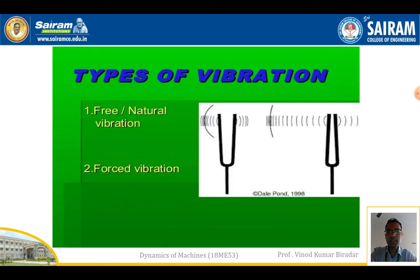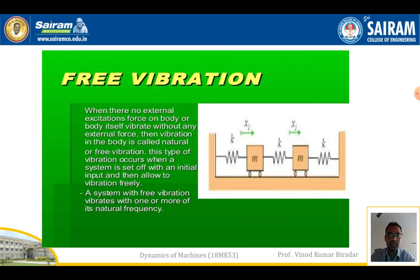There are different types of vibration. For your syllabus, the two main types are free vibration and forced vibration. Free vibration, also called natural vibration, means there is no external force acting on the system — the body vibrates by itself. This type of vibration occurs when the system is given an initial input and then allowed to vibrate freely. A system under free vibration vibrates at one or more of its natural frequencies.